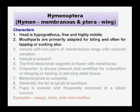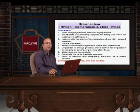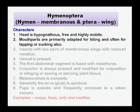Mouthparts are biting and chewing type, and sometimes lapping or sucking type of mouthparts are also found in this order. Biting and chewing type is where the insect feeds on solid food material such as leaves or tender shoots of the plant, whereas lapping and sucking mouthparts are meant for sucking plant sap, done by the help of stylets or needle-like structures.